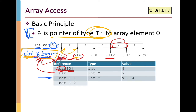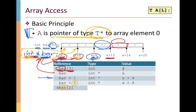Similarly, bar plus 2: when we add 2 to a pointer, we're really adding 2 times the size of each element. So this is an int star with value x plus 8. For the expression "address of bar[2]": bar[2] is the element at index 2, and its address is x plus 8, an int star. Notice that bar plus 2 and the address of bar[2] refer to the same thing — both give back a pointer to an integer that is the address of the array element at index 2.